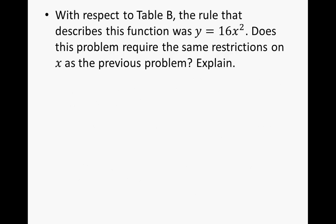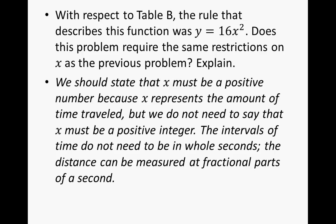With respect to table B, the rule that describes this function was y equals 16 times x squared. Does this problem require the same restrictions on x as the previous problem? We should state that x must be a positive number because x represents the amount of time traveled, but we do not need to say that x must be a positive integer. The intervals of time do not need to be in whole seconds. The distance can be measured at fractional parts of a second.